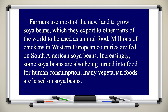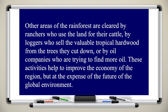Farmers use most of the new land to grow soya beans, which they export to other parts of the world to be used as animal food. Millions of chickens in Western European countries are fed on South American soya beans. Increasingly, some soya beans are also being turned into food for human consumption — many vegetarian foods are based on soya beans. Other areas of the rainforest are cleared by ranchers who use the land for their cattle, and by loggers who sell the valuable tropical hardwood from the trees they cut down.